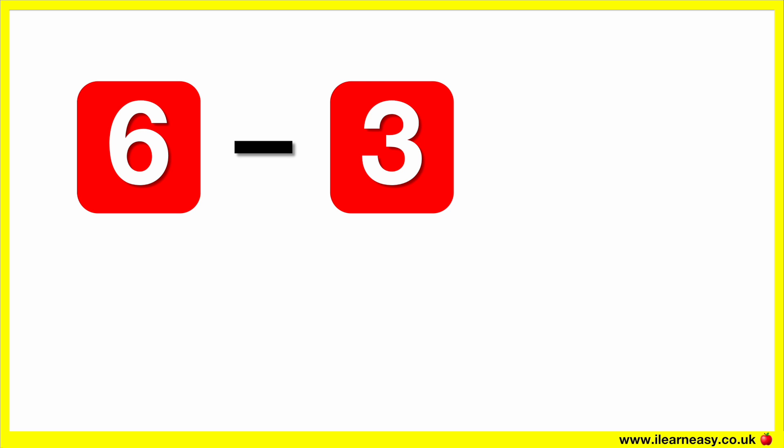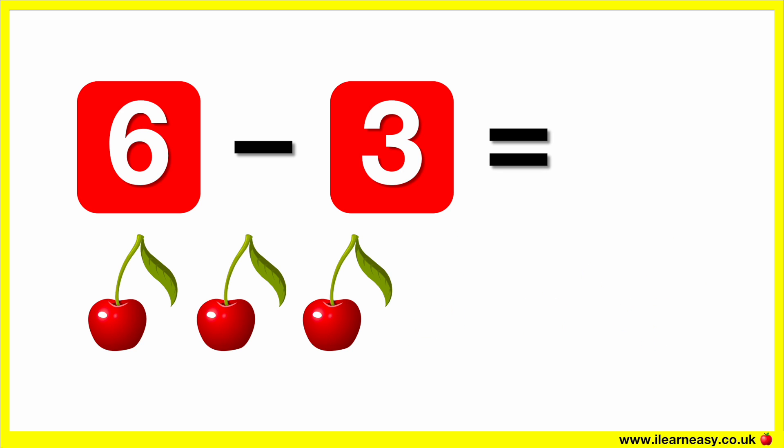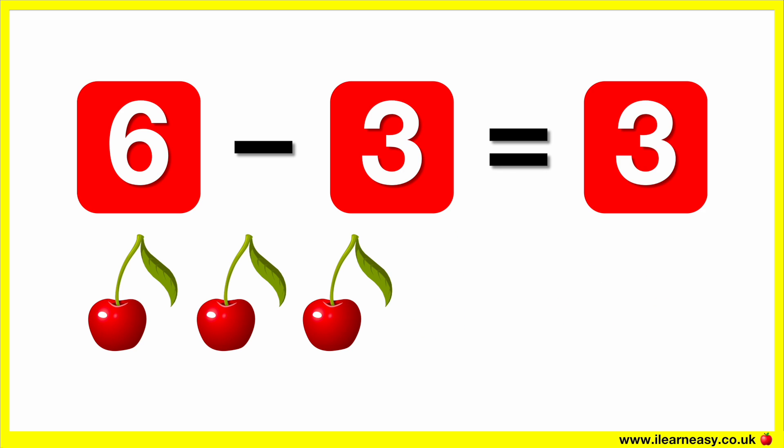Six minus three equals. Here are six cherries. Let's take away three cherries. Now there are three cherries. So, six minus three equals three.